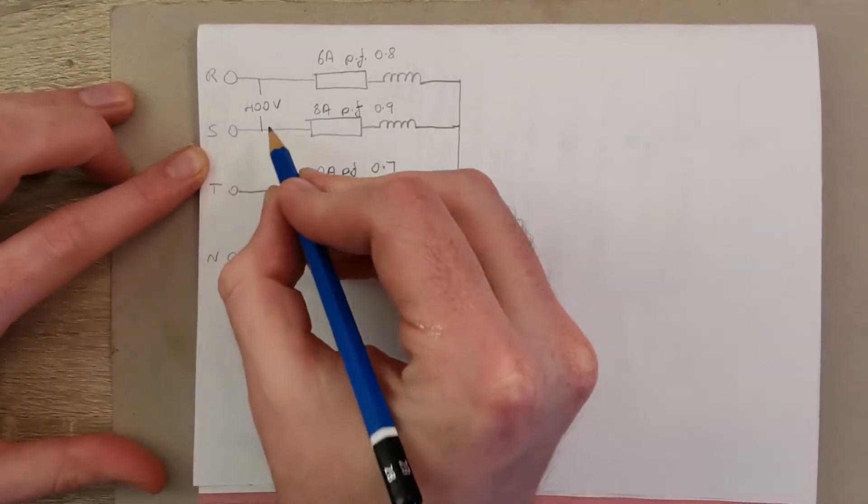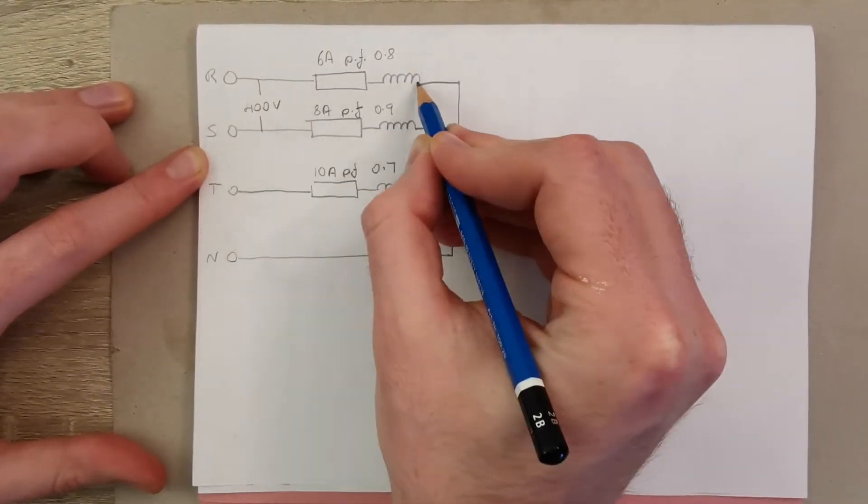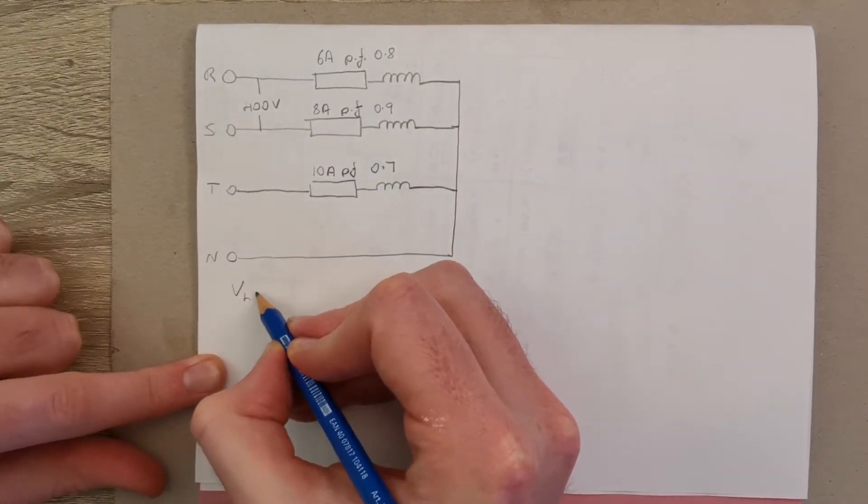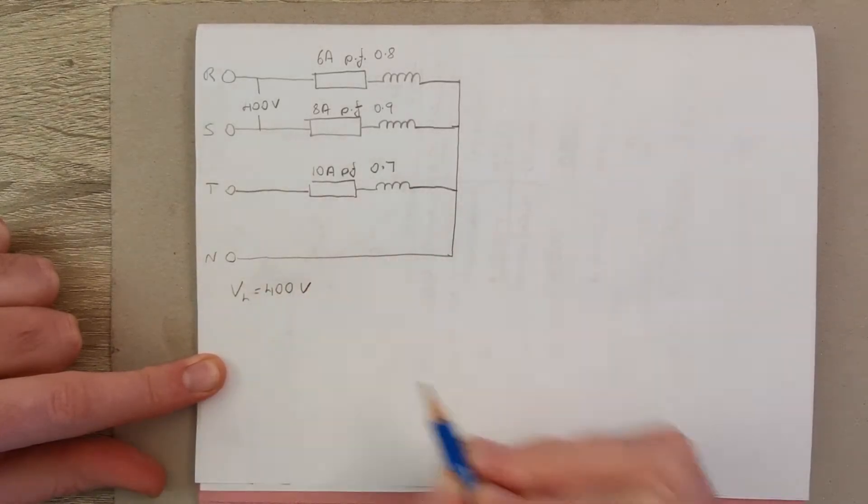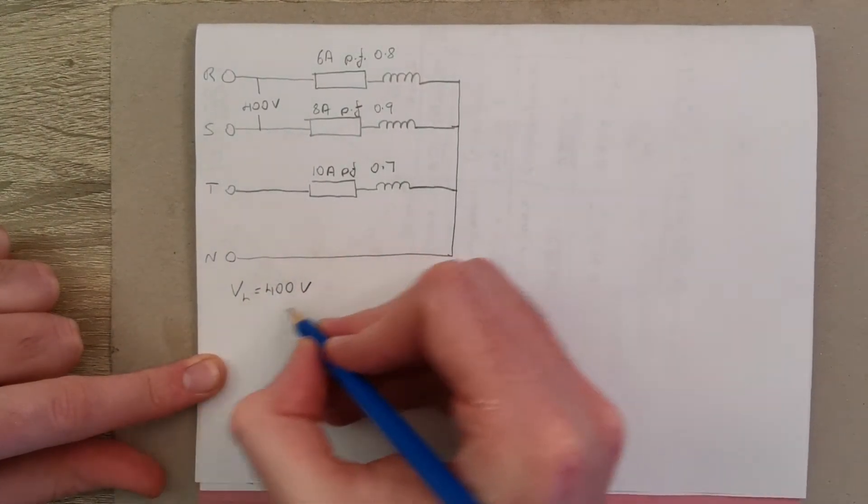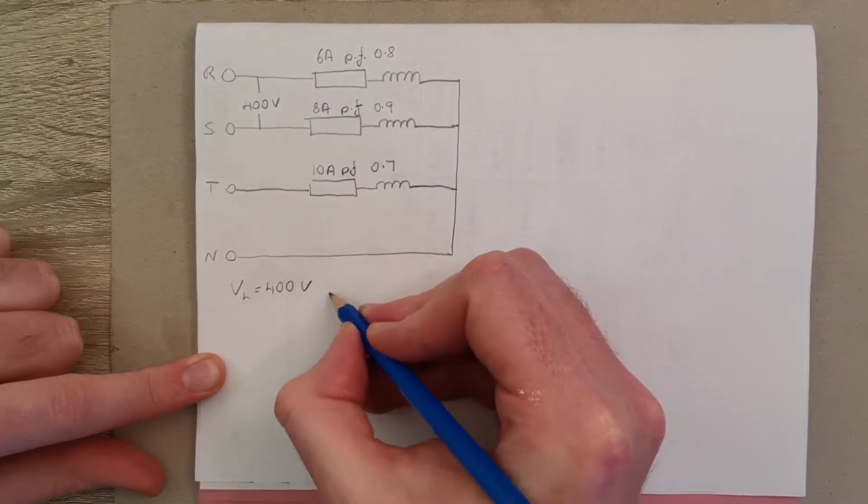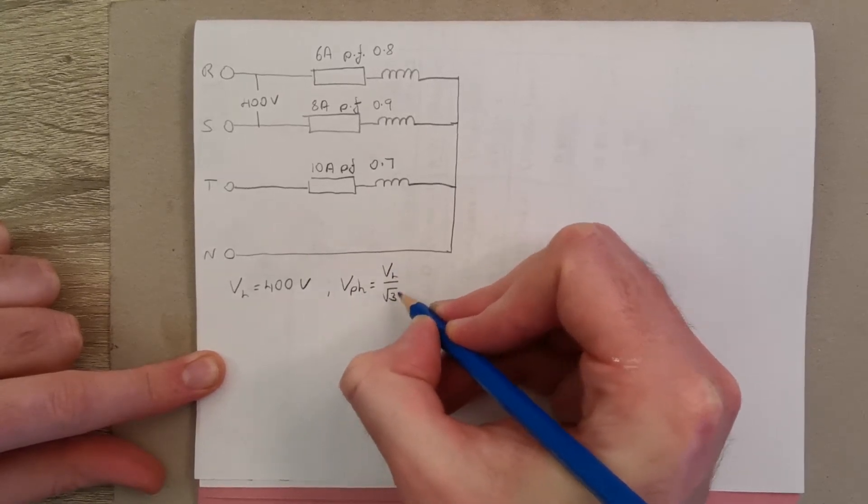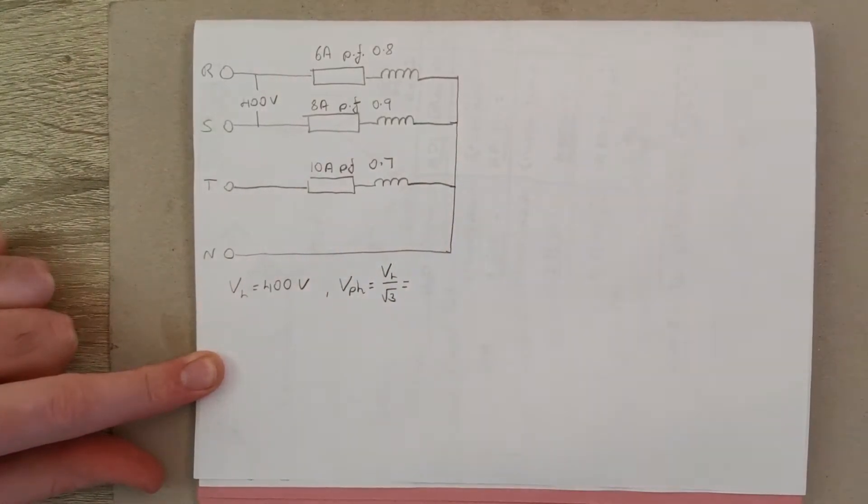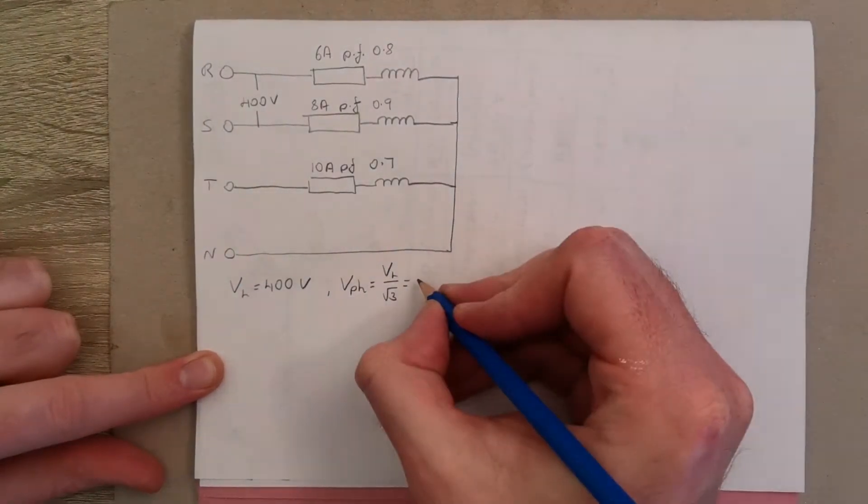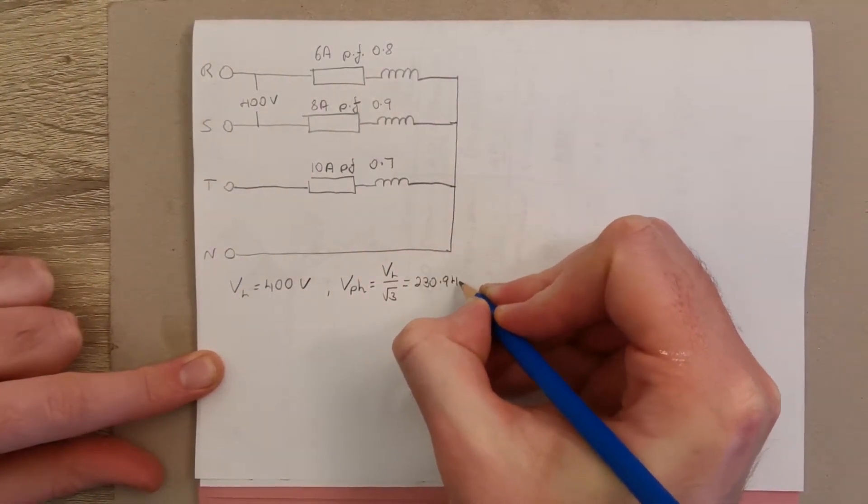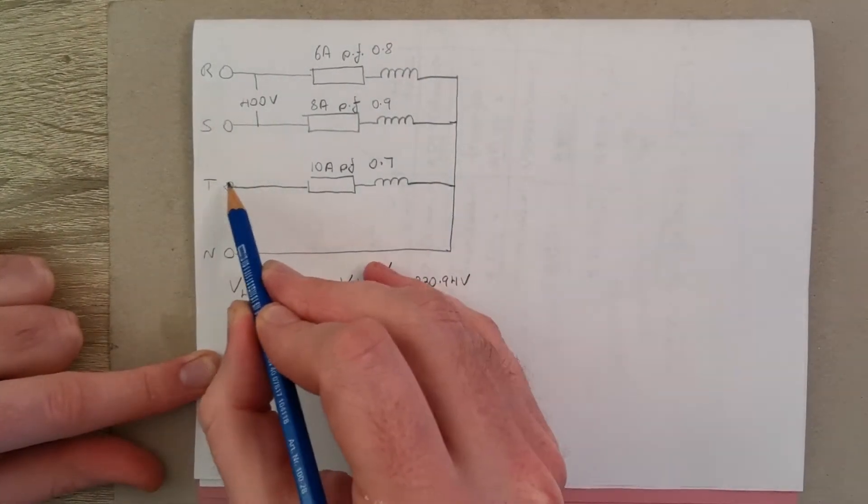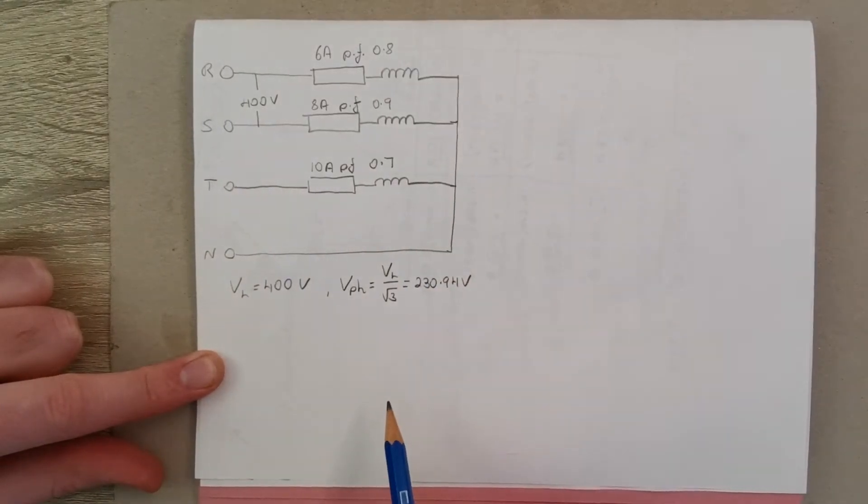First thing we need to do is work out, well if this is the line voltage, what would be the phase voltage across each phase? Well we know what the line voltage is, 400 volts, and then we can work out our phase voltage because that will be our line voltage over the square root of 3, and that works out at 230.94 volts. So that's the voltage across any phase at our star point or our neutral.